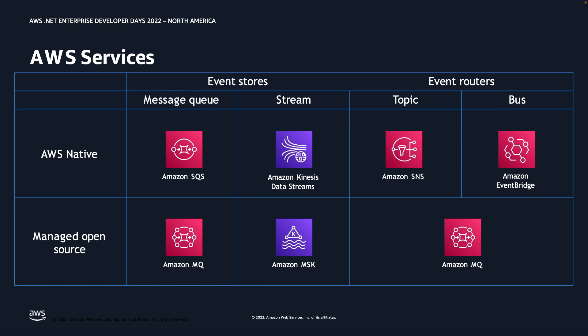On the event router side, we have Amazon SNS, which provides pub-sub functionality — something we'll see in the demo. In addition, we have Amazon EventBridge, which helps you build event-driven applications integrating with other AWS services and SaaS applications.